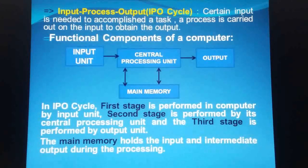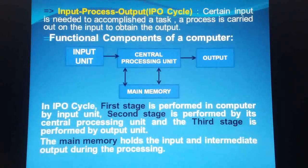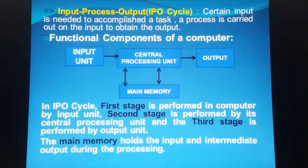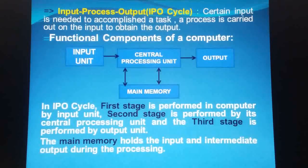Now we will discuss the functions of computer. It is the IPO cycle — input, process, and output. Certain input is needed to accomplish a task; a process is carried out on the input to obtain the output or result. This is the IPO cycle.